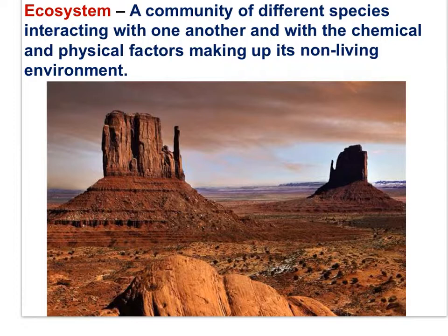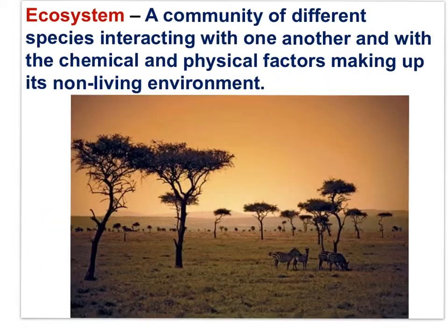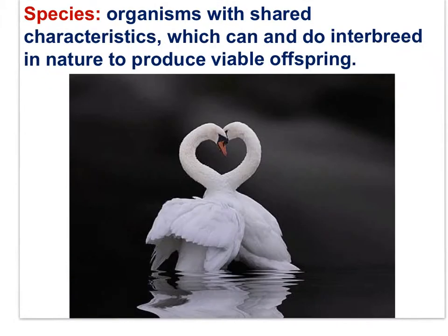An ecosystem is a community and the physical environment with which it interacts. In this photograph of a grassland, a savanna biome, we have grass species interacting with the numerous species of grazers. The community interacts with the physical environment, the long dry summers and cool wet winters, and regular fire. A species is defined as organisms with shared characteristics which can and do interbreed in nature to produce viable offspring.